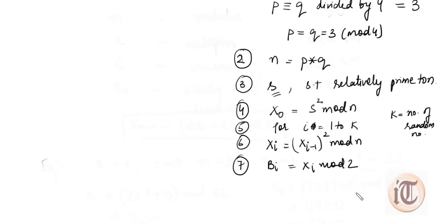The most important difference between the two algorithms — LCG and BBS — is that LCG is used to generate pseudo random numbers as integers, whereas the BBS algorithm generates pseudo random numbers in terms of bits, meaning in terms of 1s and 0s.